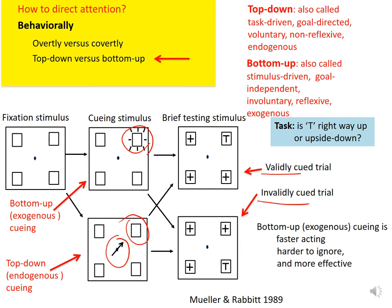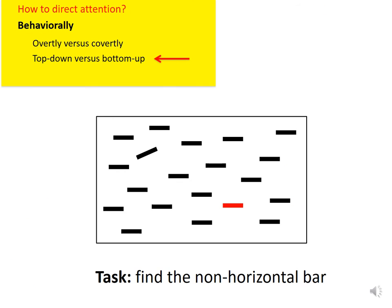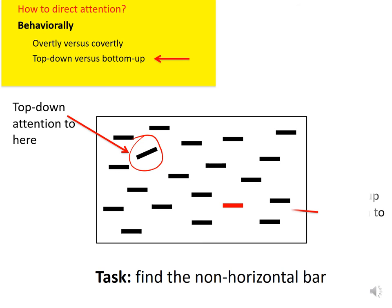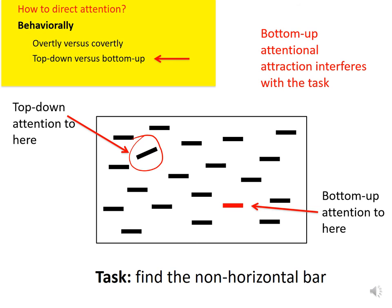We find that bottom-up cueing is faster acting, even though its effect does not last as long, and it is stronger and harder to ignore. This may explain why our attention can be so easily distracted by irrelevant visual inputs. For example, if your task is to find a non-horizontal bar, top-down attention should be directed to the target bar. But you cannot help noticing a non-target red bar because its unique color attracts your attention in a bottom-up manner, independent of your goal. This distraction can slow you down in reporting the target bar.